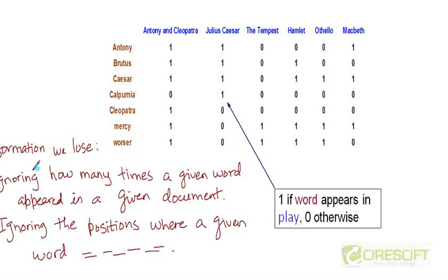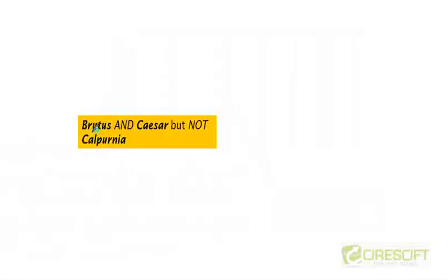And that's okay because it turns out that we don't really need to keep track of this information in order to answer the query that we had, which only asks for the presence of the words Brutus and Caesar in the document and the absence of the word Calpurnia. We don't need positional information or frequency information to answer this query.